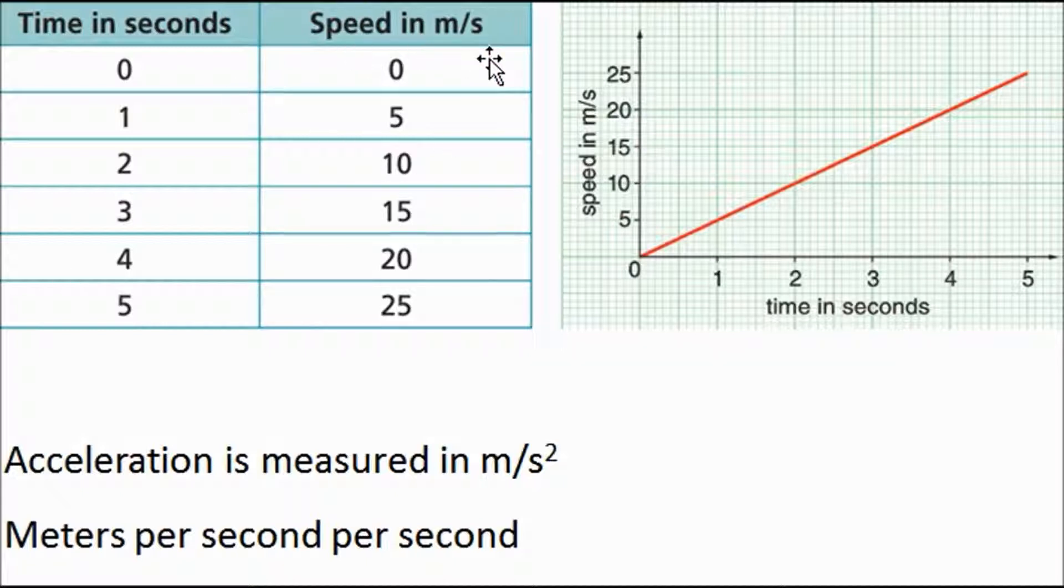Have a look at this table. Each second, the speed is going up by 5 meters per second. It goes up 5, it goes up another 5, another 5, and so on and so forth. So it is increasing by 5 meters per second per second. It's kind of strange to get your head around. So it's going up by 5 meters per second every second, or 5 meters per second per second. And that's like saying 5 meters per second squared.